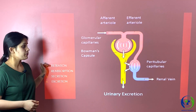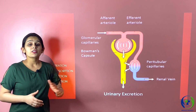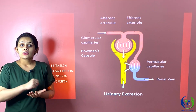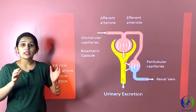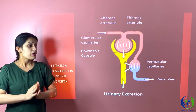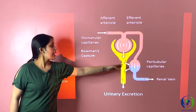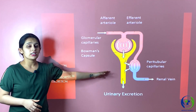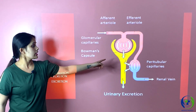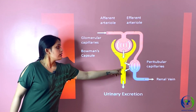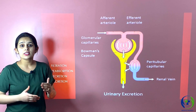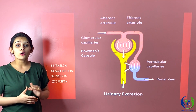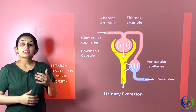The second process is tubular reabsorption. Many things are filtered through glomerular capillaries, but many of these are essential for our body and get reabsorbed from the renal tubules back into circulation through the peritubular capillaries. The next process is tubular secretion — certain substances are directly transported from the peritubular capillaries into the renal tubules by active secretion. All these substances are then excreted out in the form of urine, which is the fourth point: excretion.